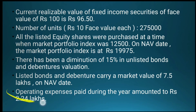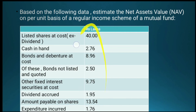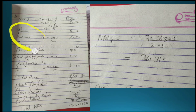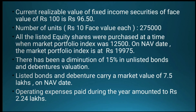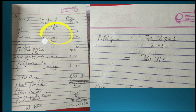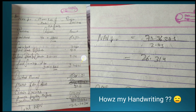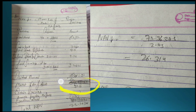The key point in this question was that operating expenses were 'paid', so we did not consider them. For exam presentation: listed shares' market value was found by dividing by 12,500 and multiplying by 19,975. Cash was added as-is, listed bonds added, unlisted bonds added after 15% diminution, fixed securities' market value calculated, dividend accrued added — total market value of assets: 87.66 lakhs.